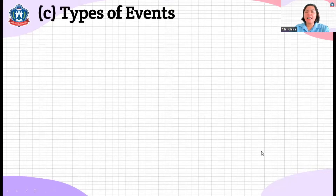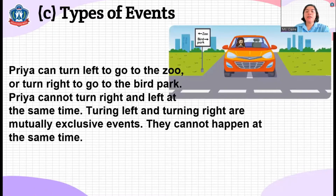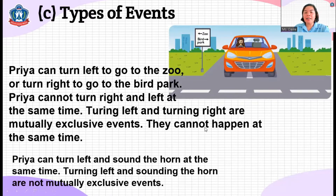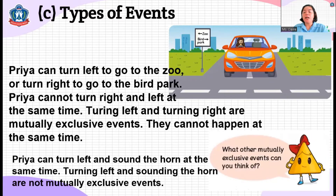We have what we call types of events. Priya can turn left to go to the zoo or turn right to go to the bird park. Priya cannot turn right and left at the same time. Turning left and turning right are mutually exclusive events — they cannot be done at the same time. But if Priya can turn left and turn on the horn of her car, she can do that. Turning left and sounding the horn are not mutually exclusive events. Think of more mutually exclusive events to share during class.